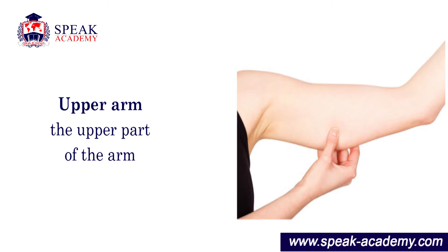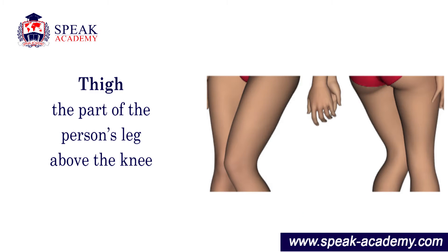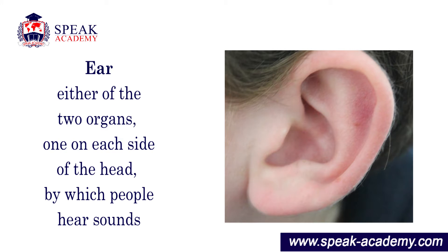Upper arm: the upper part of the arm. Thigh: the part of a person's leg above the knee. Ear: either of the two organs, one on each side of the head, by which people hear sounds.